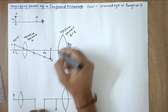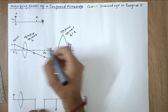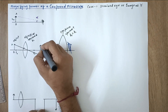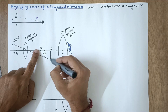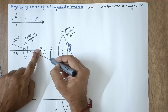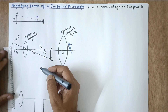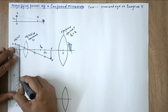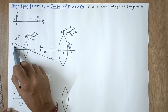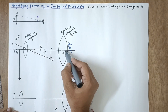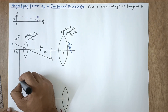The eyepiece can be shifted in both directions. Its focus is somewhere here, let's call it fe. Since A'B' is between O and f of the eyepiece, we know that a virtual and enlarged image is formed on the same side as the object. So the final image is drawn here. For the objective, A'B' is the image; for the eyepiece, A'B' is the object, and the final image is A''B''.